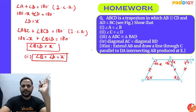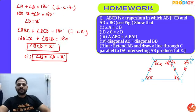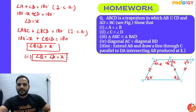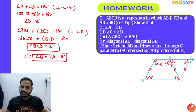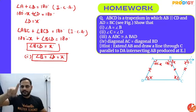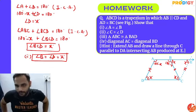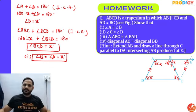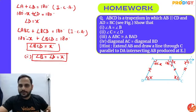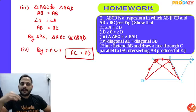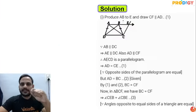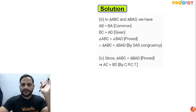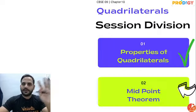Once we've proved triangle ABC congruent to triangle BAD, by CPCT we can directly say diagonal AC equals diagonal BD. The question is lengthy but not difficult — once you solve angle A equals angle B, everything else follows easily.